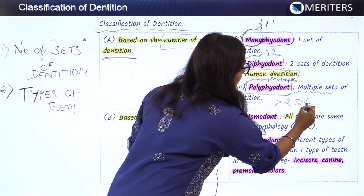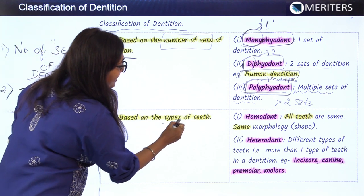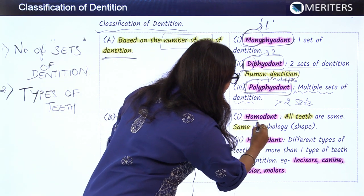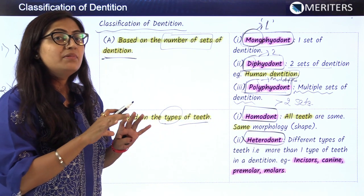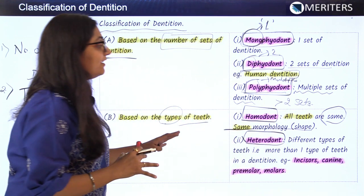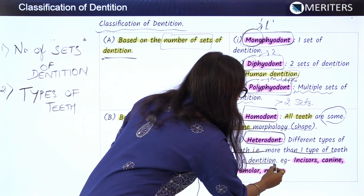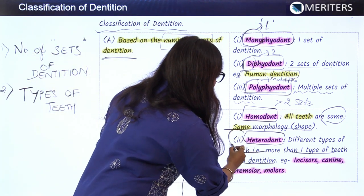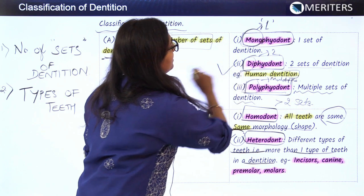Polyphyodont have multiple sets of dentition, more than two sets. Then comes the classification based on the type of teeth: homodont and heterodont. Homo means same, so all teeth are the same in morphology or shape. Hetero means different, so different types of teeth are present — more than one type. For example, incisors have a different shape, canines have a different shape, molars have a different shape. So human teeth are heterodont, and having two sets, they are diphyodont.